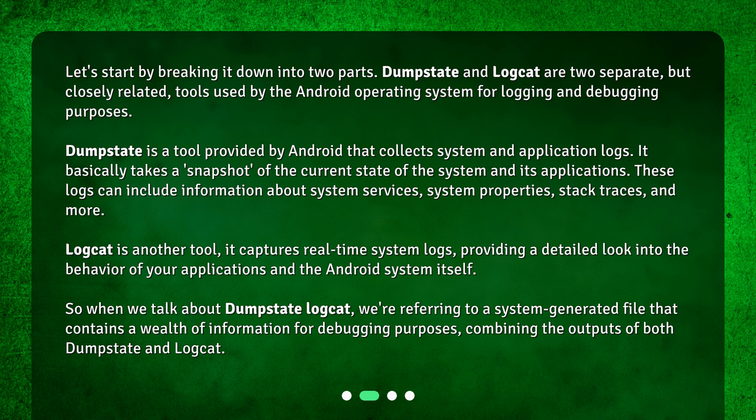LogCat is another tool. It captures real-time system logs, providing a detailed look into the behavior of your applications and the Android system itself. So, when we talk about Dump State LogCat, we're referring to a system-generated file that contains a wealth of information for debugging purposes, combining the outputs of both Dump State and LogCat.